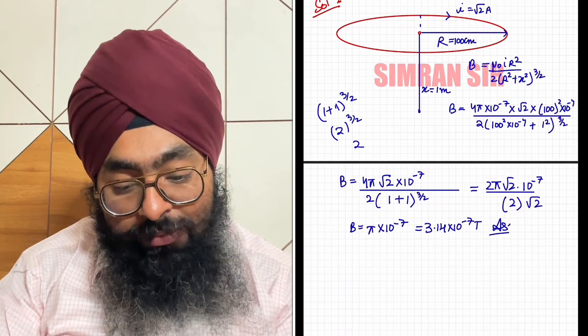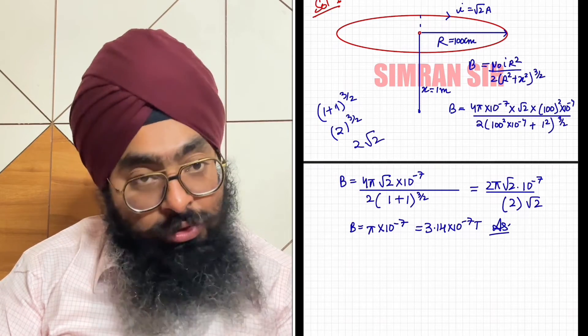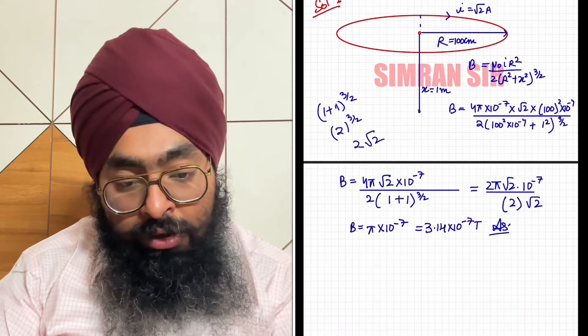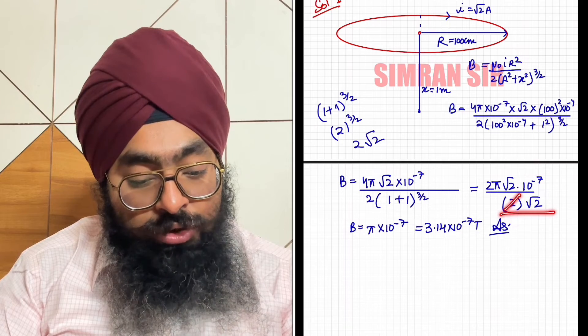Okay. 10 to the power 3/2 can be written as that number times root of that number. If it's 3^(3/2), it becomes 3√3. Similarly, 2^(3/2) becomes 2√2.